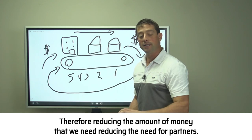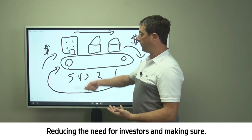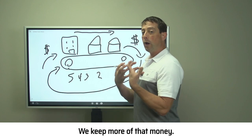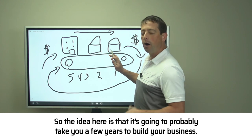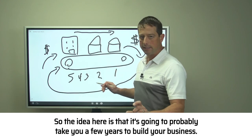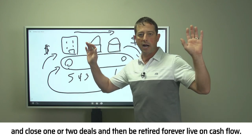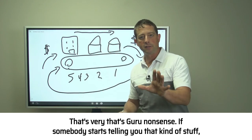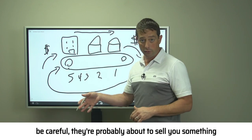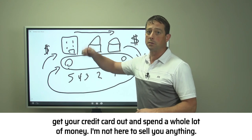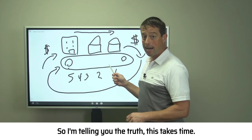Therefore reducing the amount of money that we need, reducing the need for partners, reducing the need for investors, and making sure that we keep more of that money. The idea here is that it's going to probably take you a few years to build your business. You've got to understand that. This is not something where you're going to go out and close one or two deals and then be retired forever and live on cash flow. That's guru nonsense. If somebody starts telling you that kind of stuff, be careful—they're probably about to sell you something.